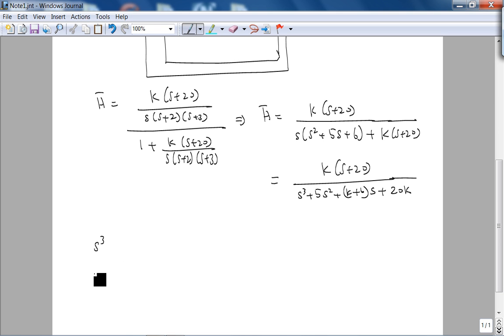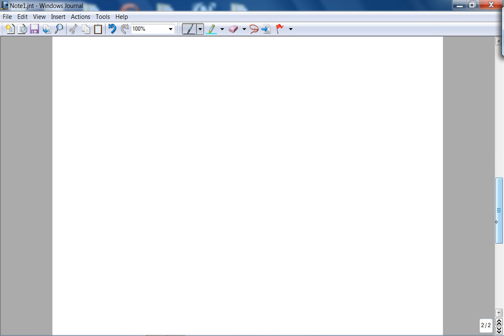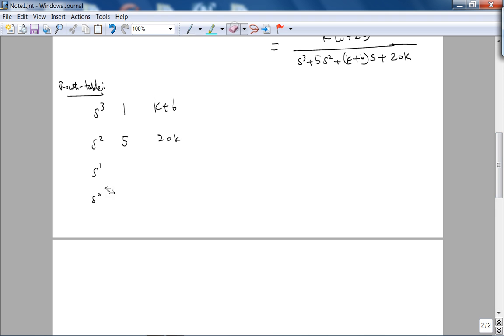So you have s cubed, s squared, over the Routh table, s and s to the 0, so you have 1, 5, k plus 6, 20k, and then 0s. So this entry here, let me put this 0 here. So this entry, B1...